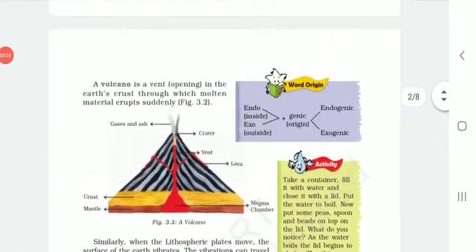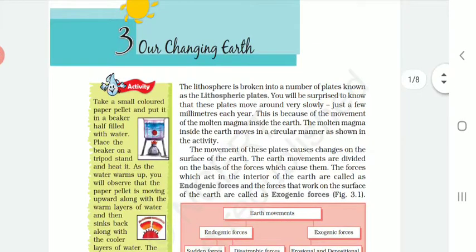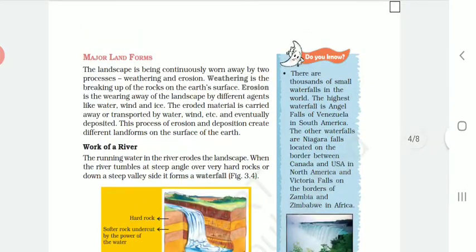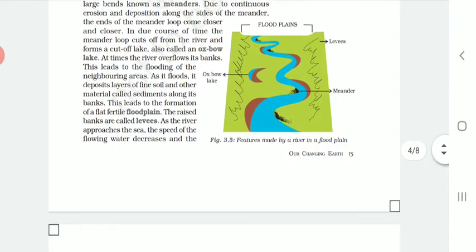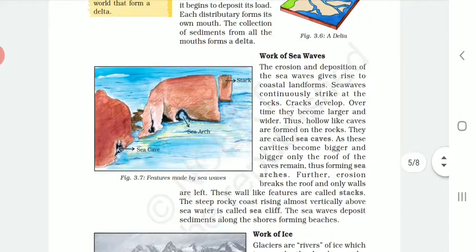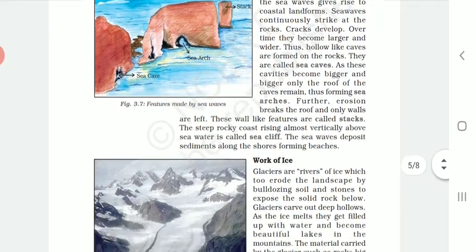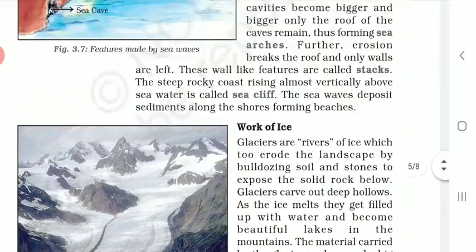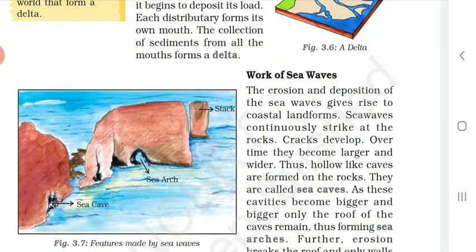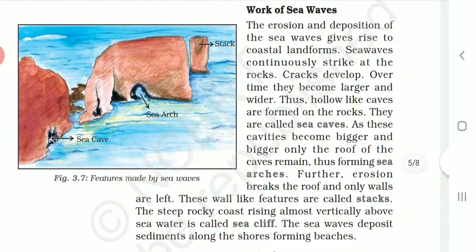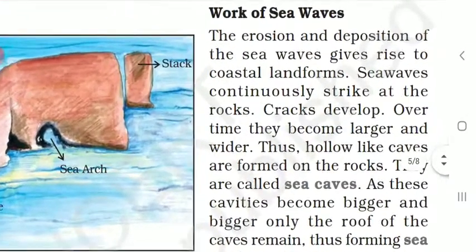Good morning children! We were discussing our Changing Earth. In this chapter till now we have discussed about the major landforms, work of river, and the different landforms formed by the river. The two points that are omitted are work of sea waves and work of ice — meaning they will not come in the exam. But I am going to complete these points so that you understand them clearly. Here we are going to see the work of sea waves.